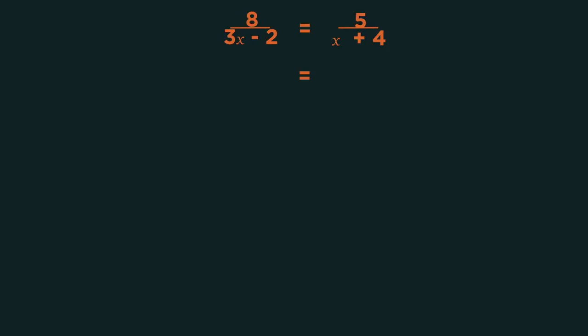Let's jump straight in with an example. To get rid of the 3x minus 2 and the x plus 4 denominators, we just need to multiply them both up. We multiply everything by 3x minus 2, but on this side the multiply by and divide by just cancel out.